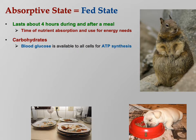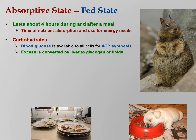During the absorptive or fed state, blood glucose is available to all cells for ATP synthesis. As you're eating, you're getting glucose into your blood, and now all your cells are able to make their ATP and stay alive. Excess glucose is converted by the liver to glycogen — that's glycogenesis — or to lipids, which is lipogenesis.